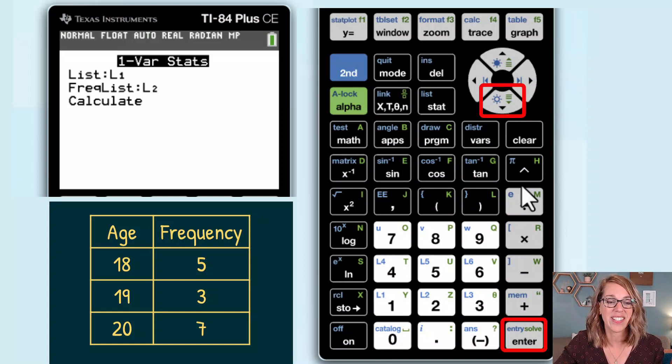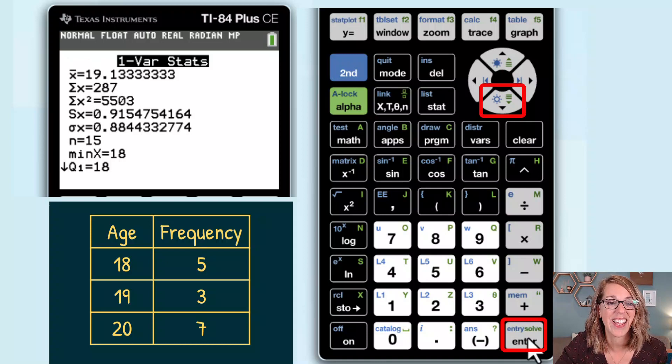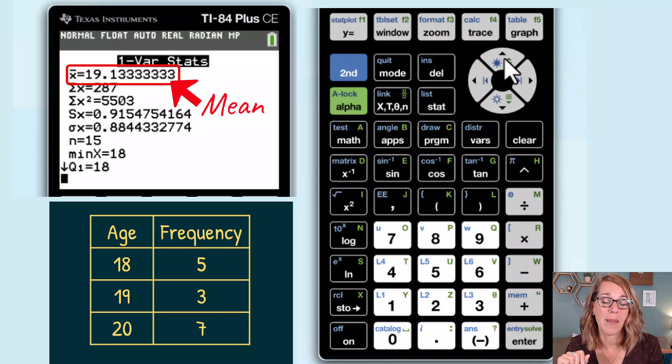Now I've got this how I want it. So I hit calculate, and then I've got all of my measures here. Up at the top, I've got my mean as X bar, also my weighted mean.